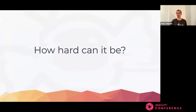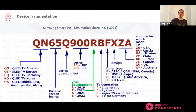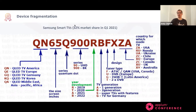So how hard can it be? Most of those applications are just HTML-based and you have quite good tools for HTML app testing, right? Well, let me tell you how hard it is. Device fragmentation is a huge deal in living room devices and smart TVs. For example, Samsung's brand of smart TVs has a 32% market share in the first quarter of 2021 — so they are a very big player.